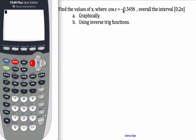Okay, we're going to find values of x where cosine x is equal to negative 0.13456 over this particular interval, and we're going to do it graphically this time.